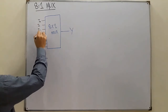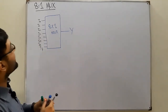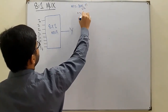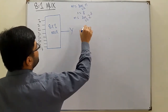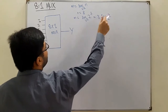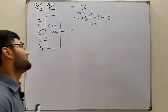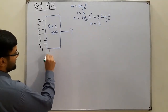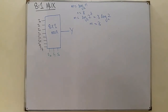The inputs are: I0, I1, I2, I3, I4, I5, I6, and I7. Now the number of select lines: the formula is M equals log base two of N. N equals eight in this case, so M equals log base two of eight, which is two to the power three, giving us three select lines designated as S2, S1, and S0 — where S2 is the most significant bit and S0 is the least significant bit.